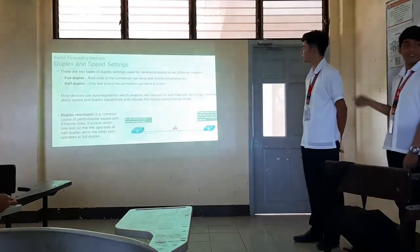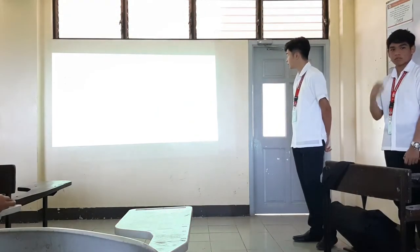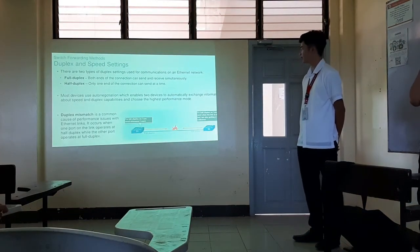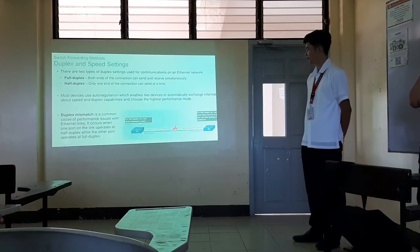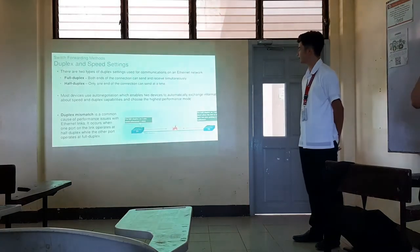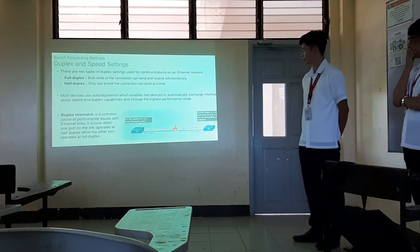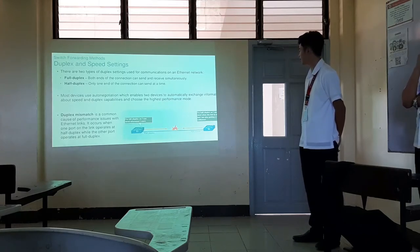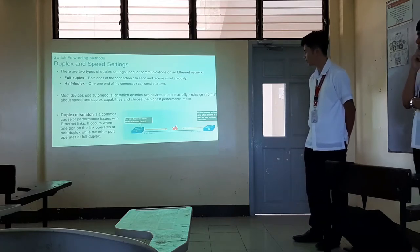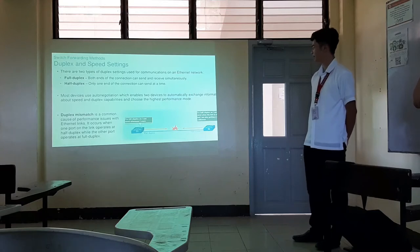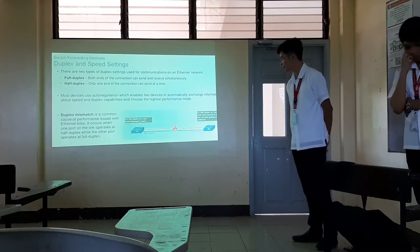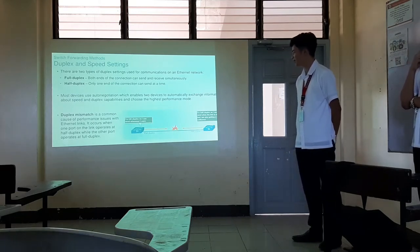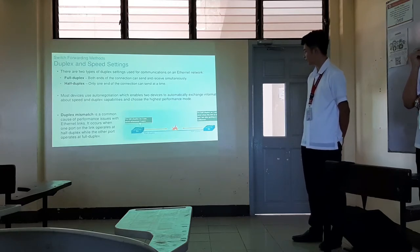Duplex and speed settings: there are two types of duplex settings used for communication on an Ethernet network. Full duplex: both ends of the connection can send and receive at the same time. Half duplex: only one end of the connection can send at a time. Most devices use auto-negotiation, which enables two devices to automatically exchange information about speed and duplex capabilities and choose the highest performance mode. Duplex mismatch is a common cause of performance issues on Ethernet links, occurring when one port operates at half duplex while the other operates at full duplex.